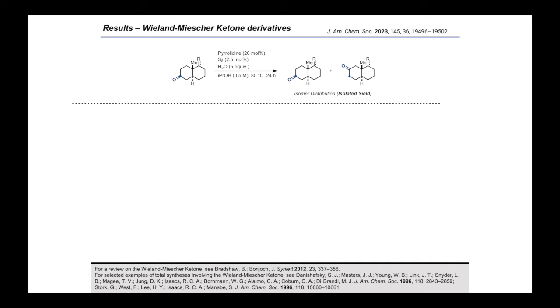Various derivatives of the Wieland-Miescher ketone, which has been extensively used as a key intermediate in natural product synthesis, were investigated. Ketoalcohol 5A reacted smoothly to provide 2-oxoisomer 5B as the major product, with no other ketone isomers detected. Diketone 6A also gave the product 6B as the only other observed isomer, underlining the critical role of the kinetic selectivity of our method, allowing us to obtain the desired product in 44% isolated yield.